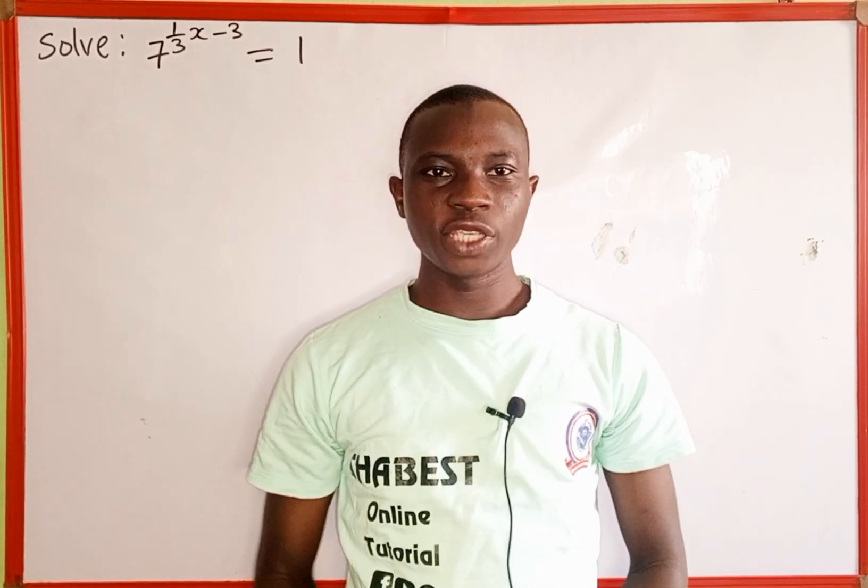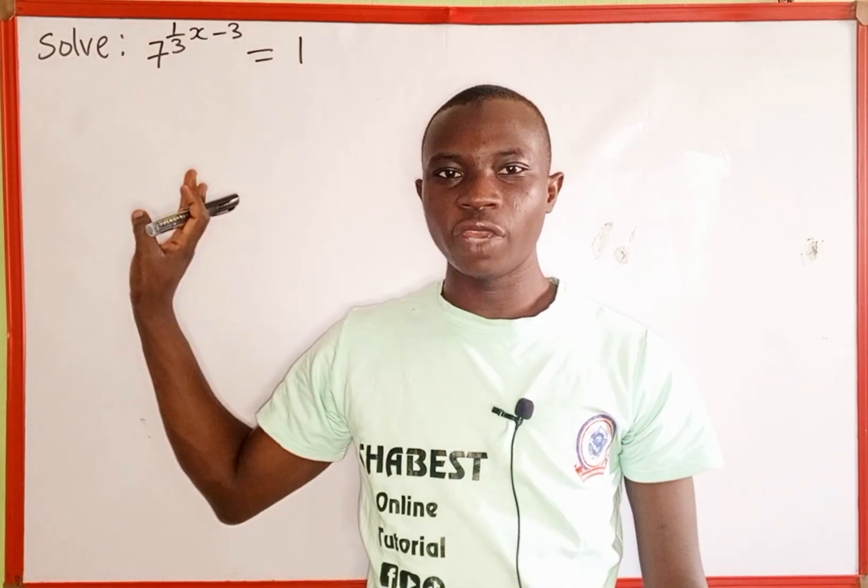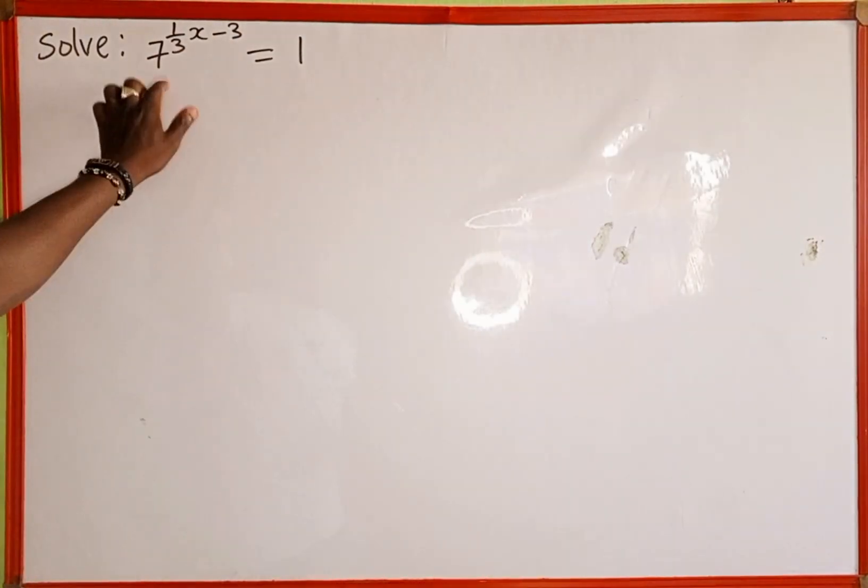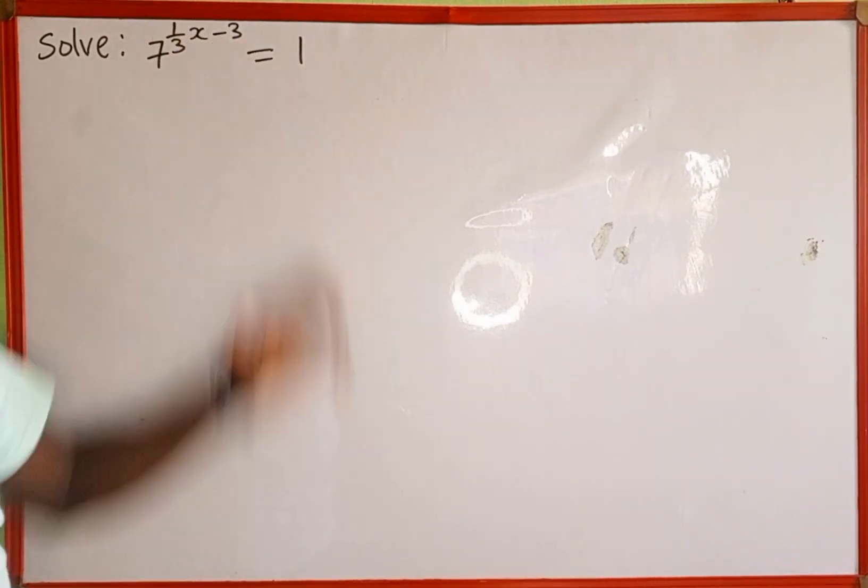Hello everyone, you're welcome back to Shabez online tutorial. In today's tutorial we're going to learn how to solve for the value of x in this exponential equation. The given equation is 7 to the power of 1 over 3x minus 3 equals 1.